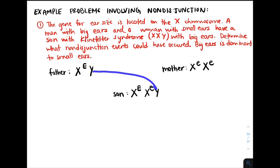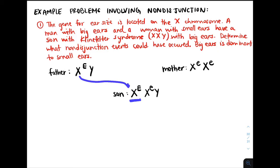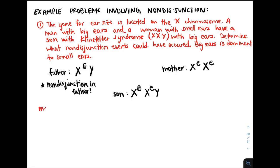So the father contributed the Y chromosome, and the mother contributed the little E allele. Where did the X with the big E come from? Well, the father is the only one that has the dominant allele, so he must have contributed that to his son. As a result, the father contributed both the X chromosome with the big E and the Y chromosome to his son. Therefore, non-disjunction must have occurred in the father.